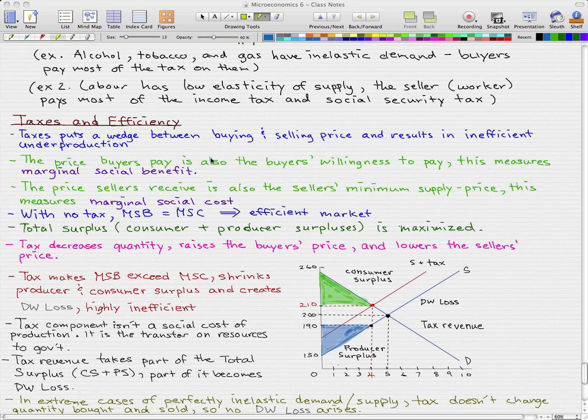The price that the buyers pay is also the buyer's willingness to pay, and this measures the marginal social benefit. The price that sellers receive is also the seller's minimum supply price, and this measures the marginal social cost.